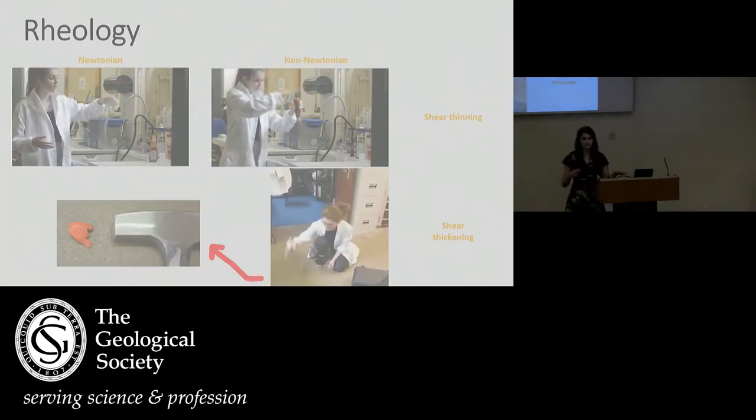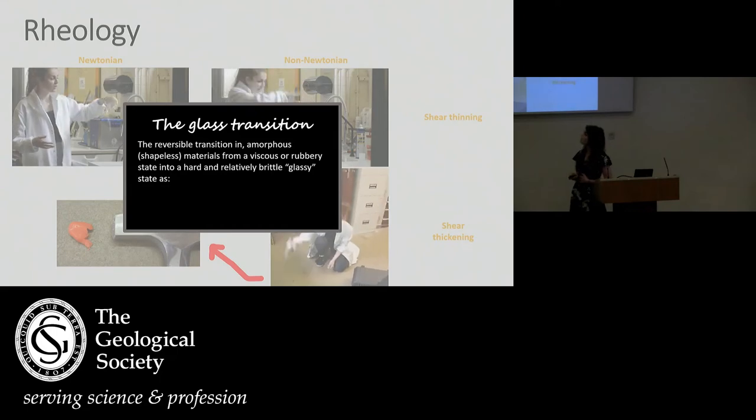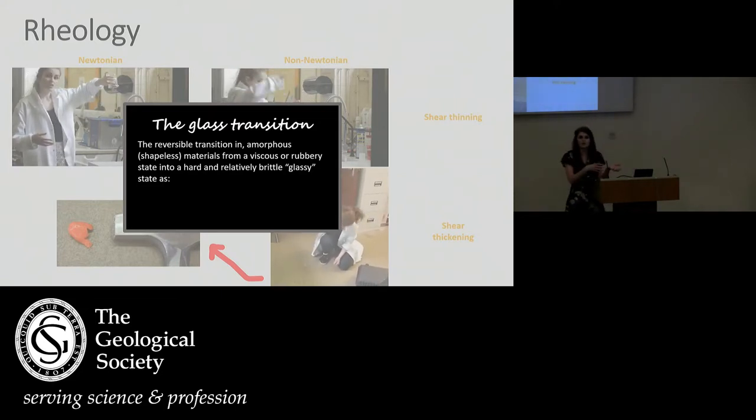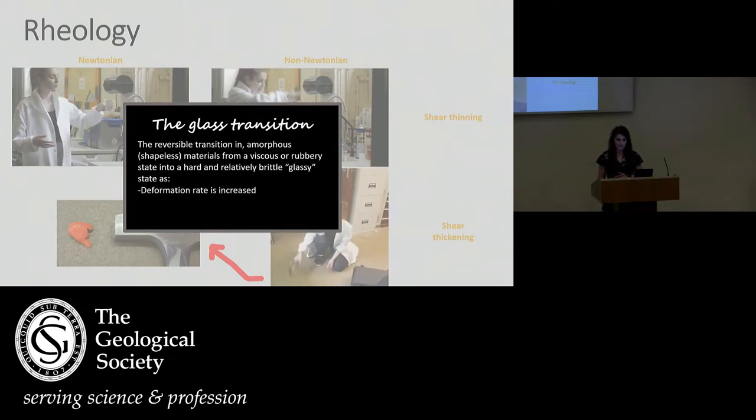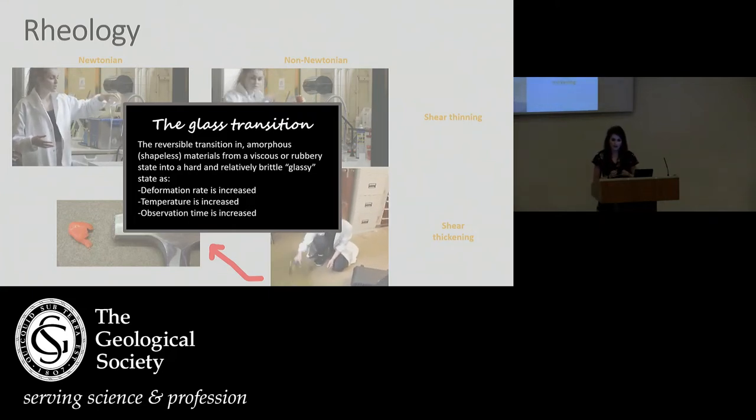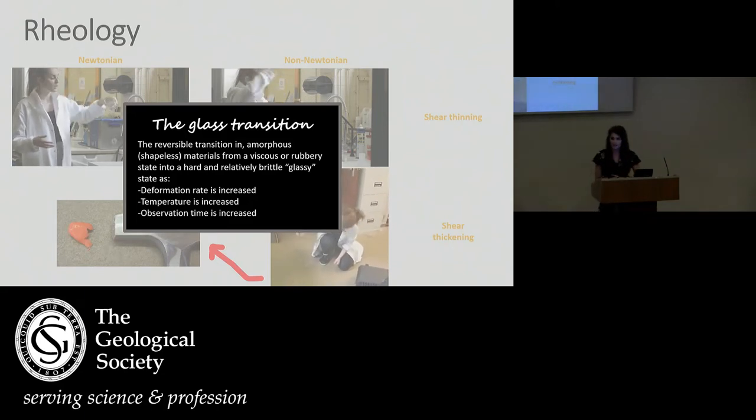So this transition between something that flows to something that breaks can be defined with the glass transition. The glass transition is nicely defined as the reversible transition in amorphous materials from viscous to rubbery state. As we go from something that's flowing or rubbery, like our silly putty, to something that's completely brittle, like when we hit it with a hammer. We can do that as we increase our deformation rate, like I showed you with the silly putty, or we can do it with temperature. We can also cross it by observation time. I think Shan introduced it really nicely earlier with salt. We look at the salt and see that it's actually static in real time, but over a period of geological time, you see that salt flows. So it too crosses the glass transition just with observation time.